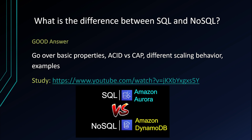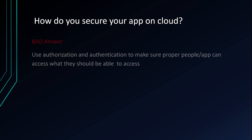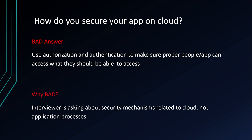Next question — this one is super important: how do you secure your application on the cloud? A bad answer is: use authorization and authentication to make sure proper people or applications can access what they should be able to access. Why is this bad? The interviewer is asking about security mechanisms related to cloud, not application processes. Authentication and authorization you have to implement whether you run your app on-prem or on the cloud — there is nothing special about that.